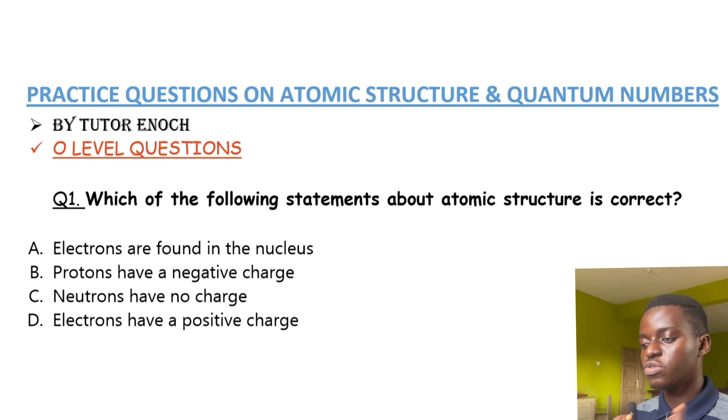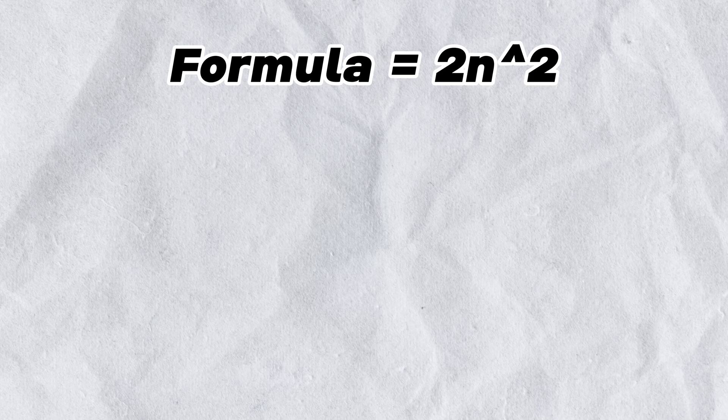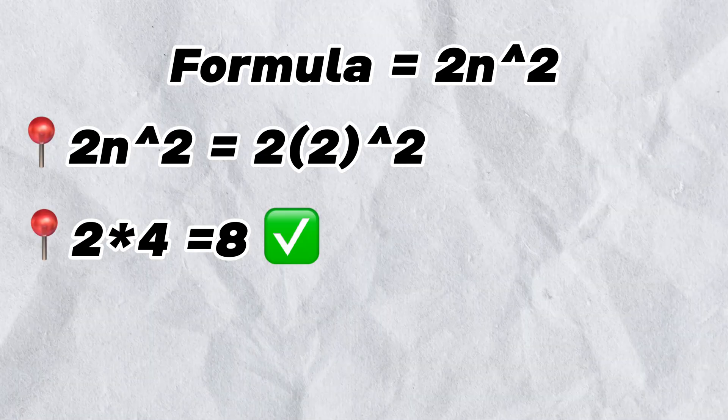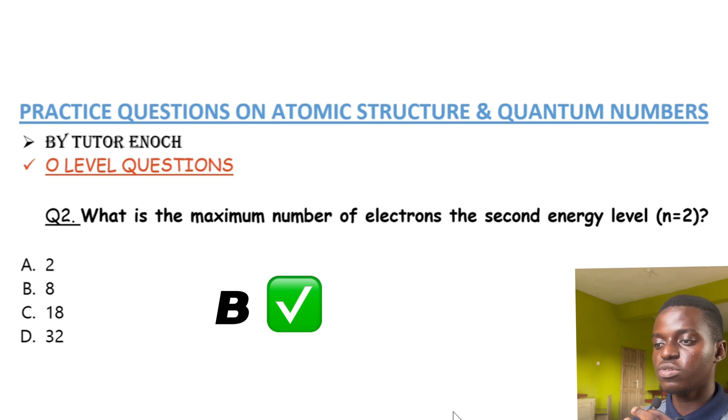The answer to question one is option C — neutrons have no charge. Question two asks: what is the maximum number of electrons the second energy level has? The maximum number of electrons in an energy level is given by the formula 2n², where n is the principal quantum number. So that's 2 × (2²) = 2 × 4 = 8. The correct answer is option B: 8.